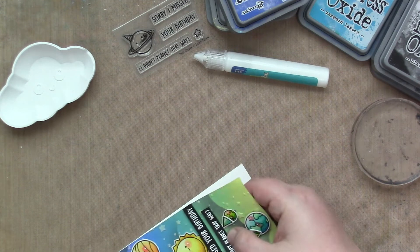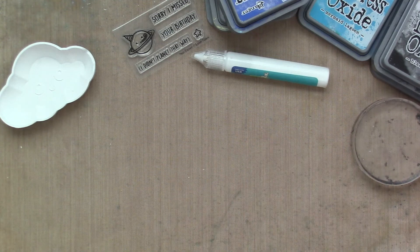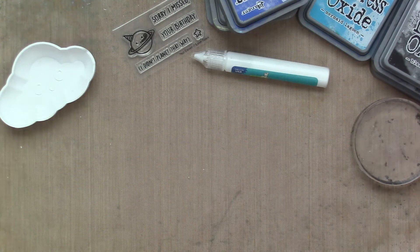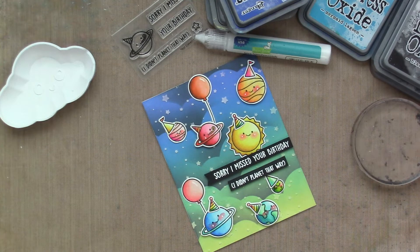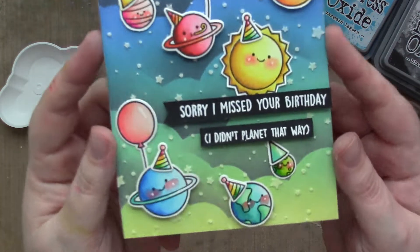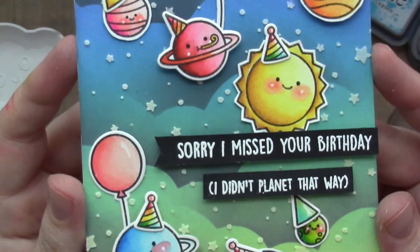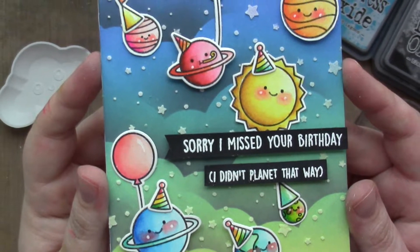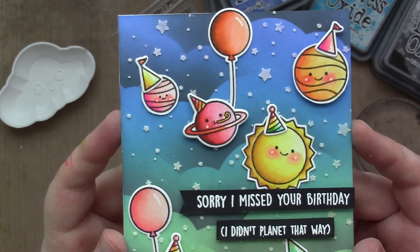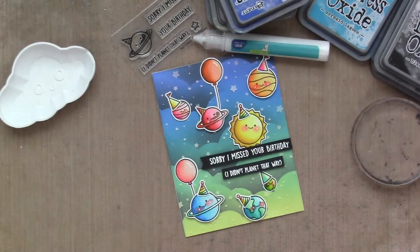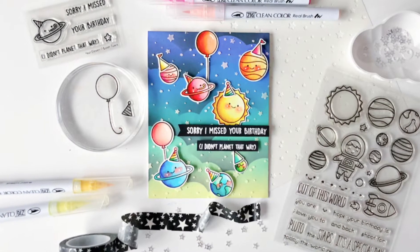Anyway, I really like how this card came out. I think it's a fun little twist on a galaxy and these rainbow planets are just ready for the party. I hope you had fun watching this card come together. Please be sure to check it out on the Lawn Fawn blog. And thanks so much for watching. Have a great day. Bye.